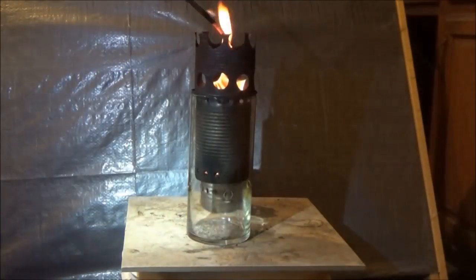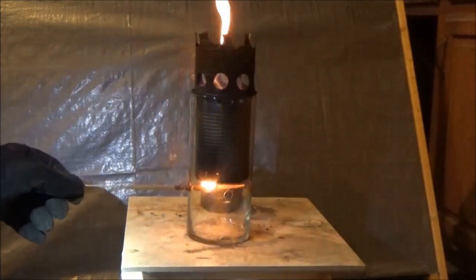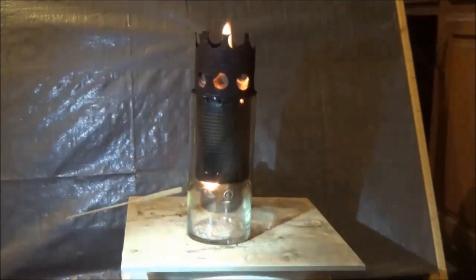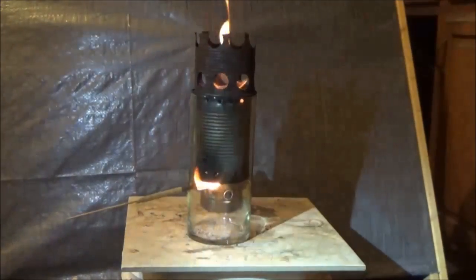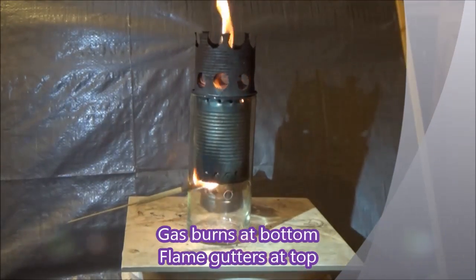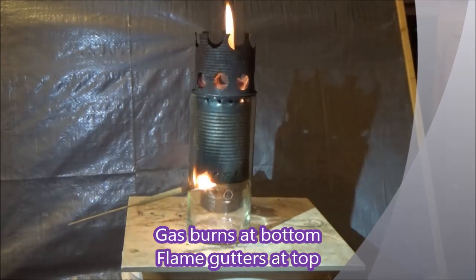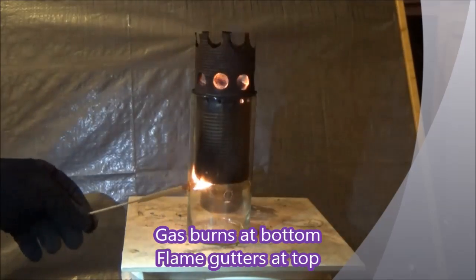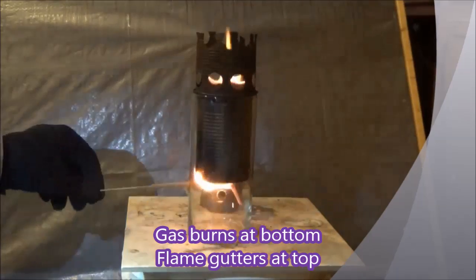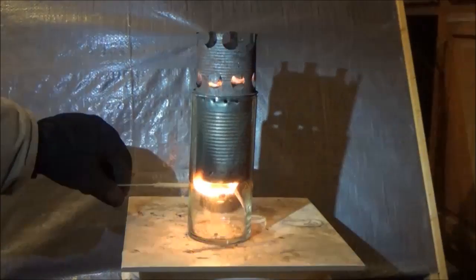This clip does a fantastic job of showing you how burning the wood gas that's coming out of the primary air holes affects the characteristics of the burning flame at the top of the stove. As you can see, when you put a small flame in, it does affect it pretty well, but as the flame under the can at the primary air holes starts burning more and more of the gas and gets bigger and bigger, the flame at the top starts to gutter out and really starts to get low.